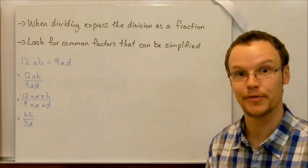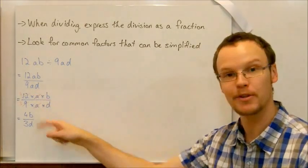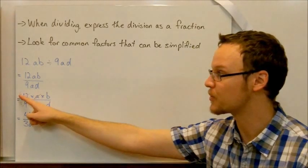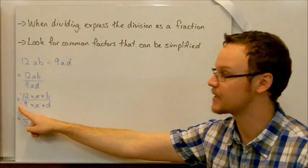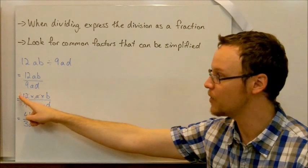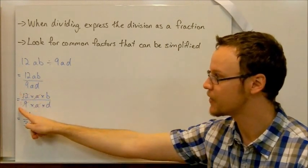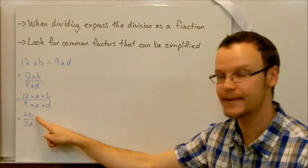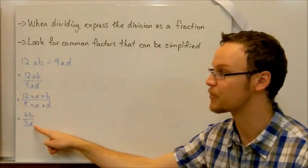Divide the top by 3, 12 divided by 3 is 4. 9 divided by 3 is 3. So we're left with the 4, the b, 3, d. So we've got 4 times b on top, 4b, and 3 times d on the bottom, 3d.